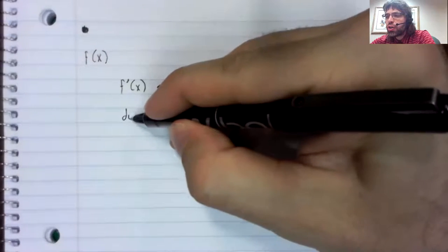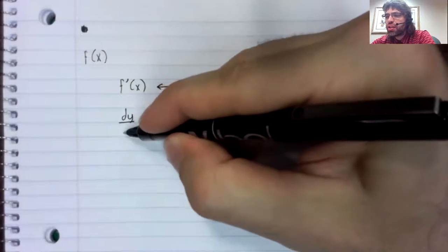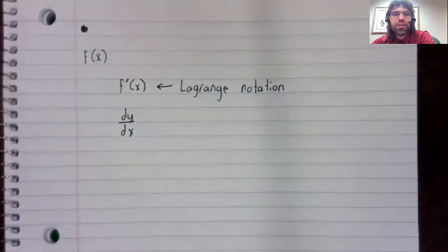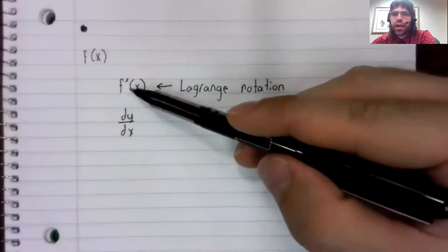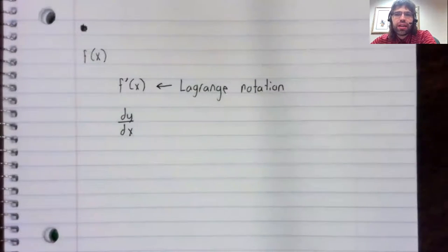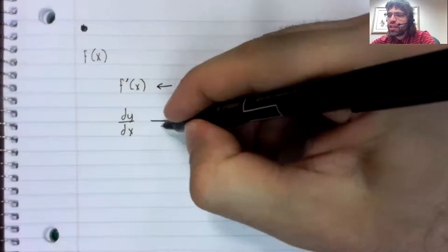The other notation that you frequently see for the derivative is that, and this and this represent the same thing. They both represent the derivative.